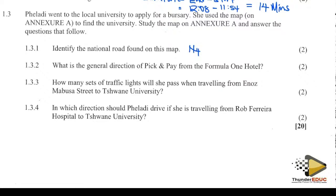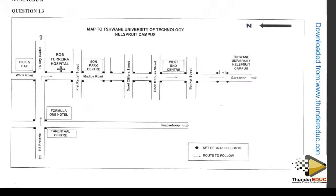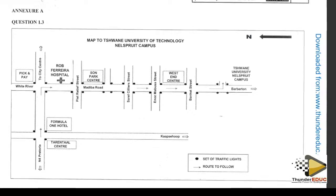Write down the general direction of Pick and Pay from Formula 1 Hotel. Someone is at Formula 1 Hotel and going to Pick and Pay. Formula 1 is this one here.